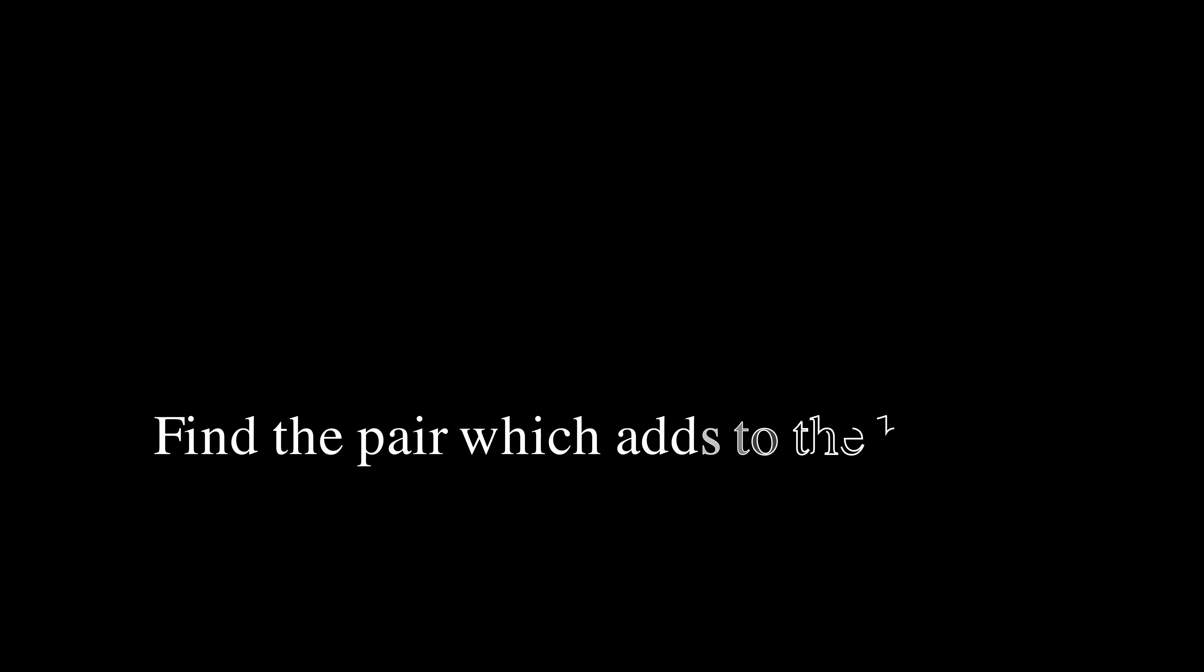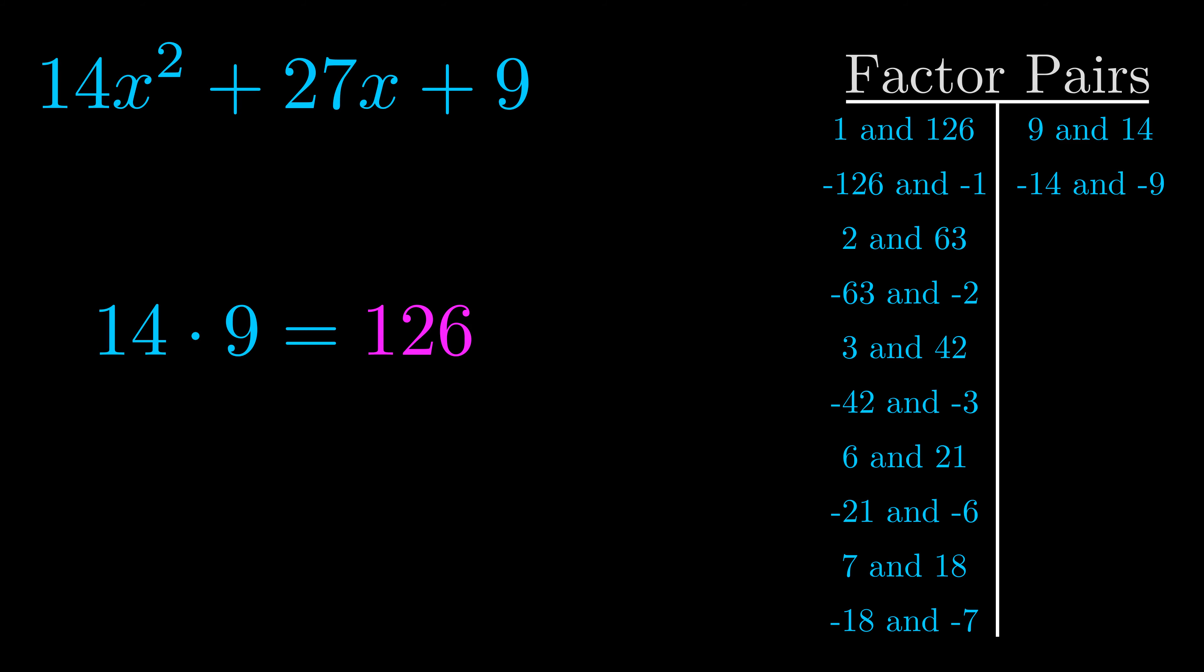The b value is the coefficient on the x term. That's the middle term, the one that we haven't done anything with yet. And really this is the only factor pair that we need.